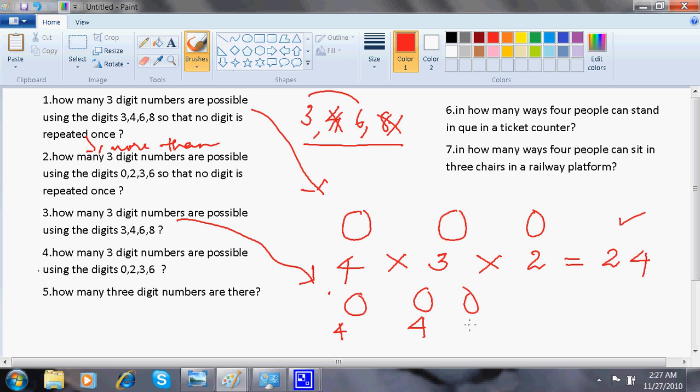And again any four can come here. Again any four can come here. So this is 64. Because there is no restriction that I used 4 and I can't use 4 here. I can use 4, 3, any number of times.